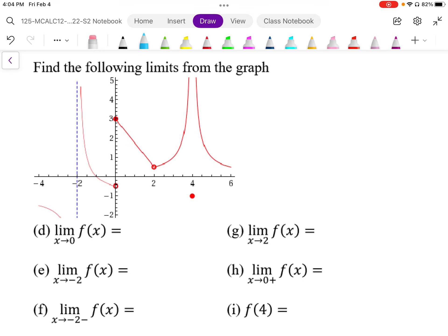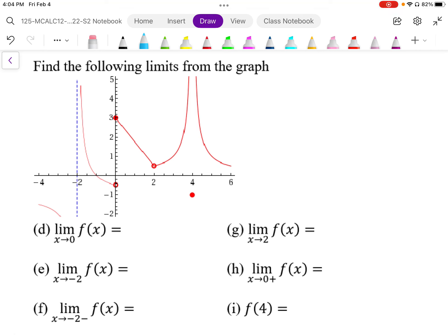So when I look at, for example, d, it says the limit as x approaches 0. So we're approaching 0. Now this is a two-sided limit, so I have to recognize that I'm approaching it from this side and this side.